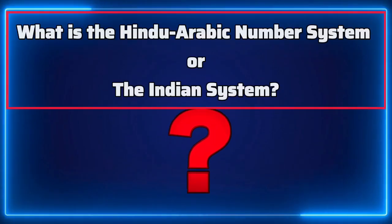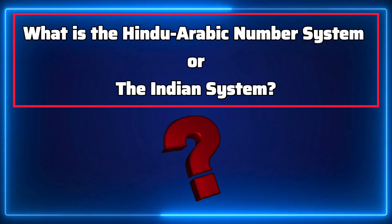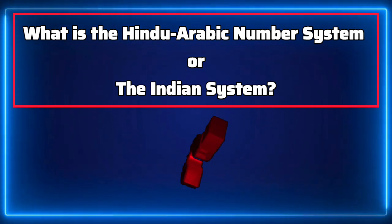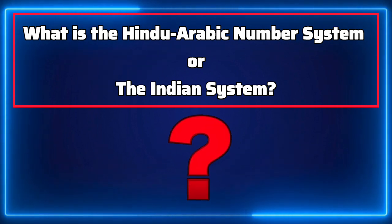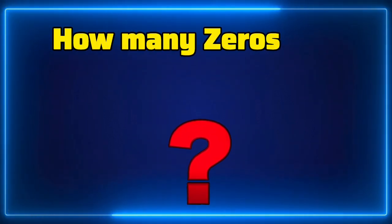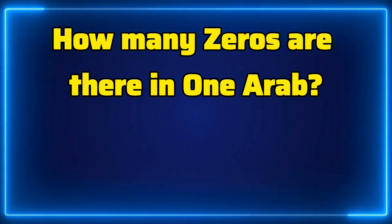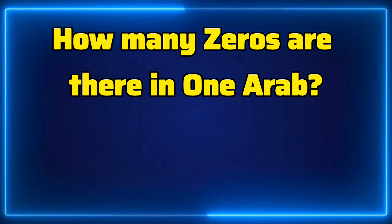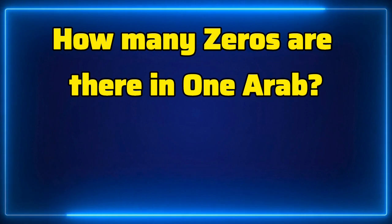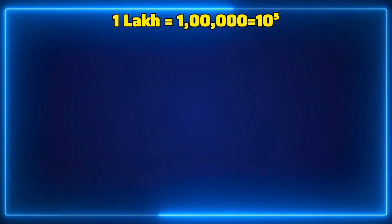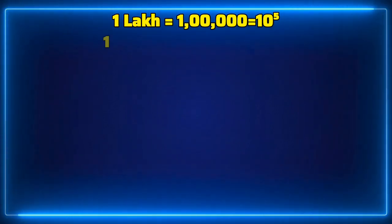A very common question asked is: what is the Hindu-Arabic number system, or the Indian number system? People ask how many zeros are there in one Arab. We know that one lakh is equal to 1 followed by five zeros, that is 10 to the power 5.